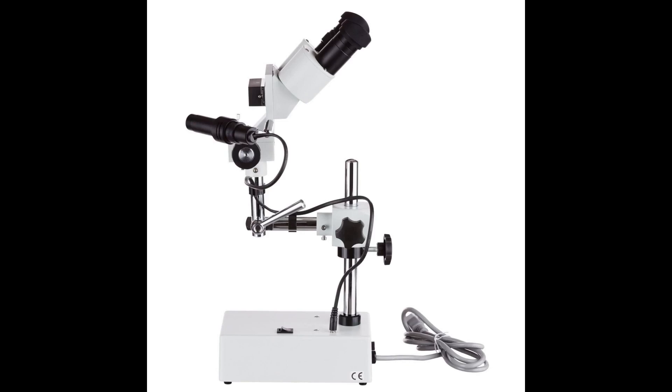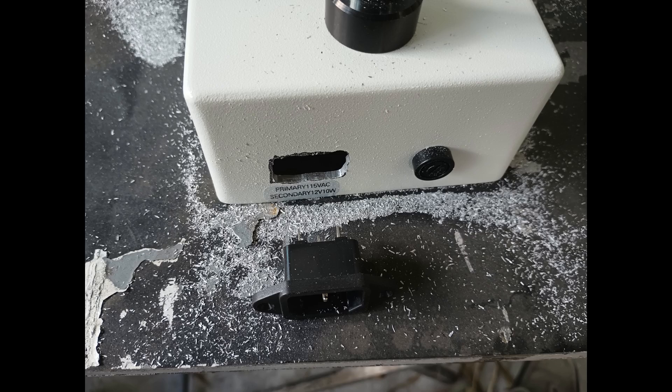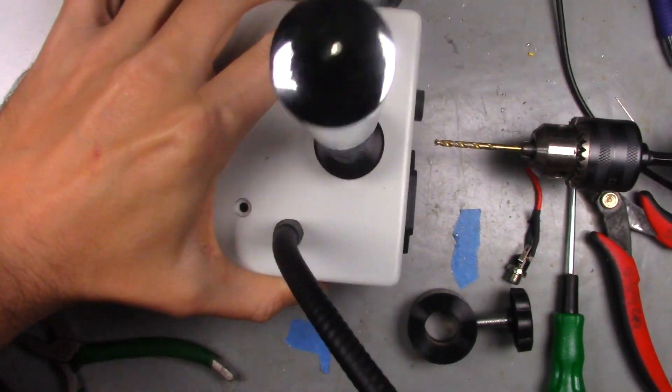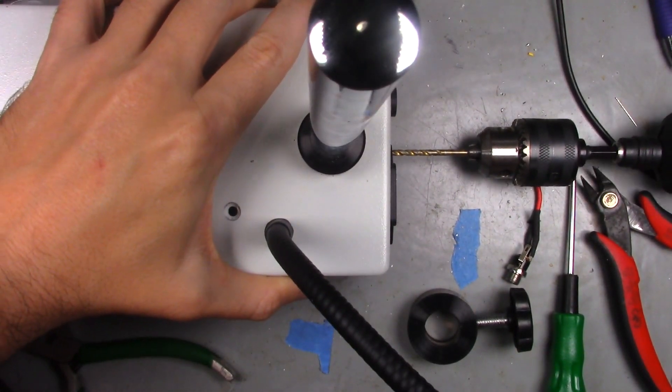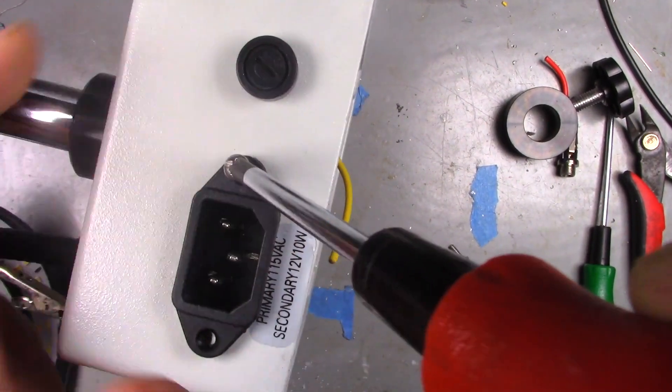Another thing I replace on anything that I can is a captive plug. These are just the worst, always getting tangled and never long enough. So I added an IEC connector instead. The pot metal used for the base of this microscope didn't stand a chance against the Dremel tool. And after some drilling for some screws, there it is, mounted.